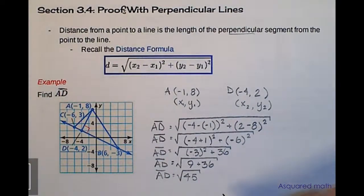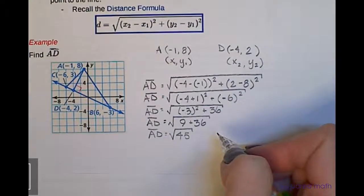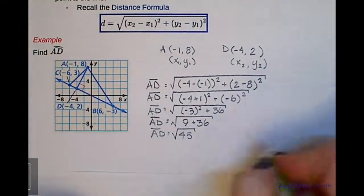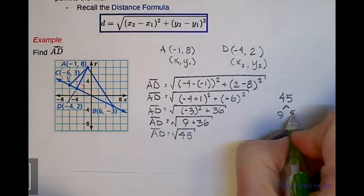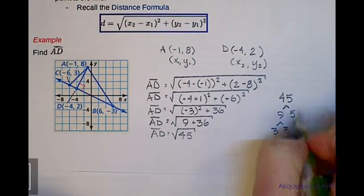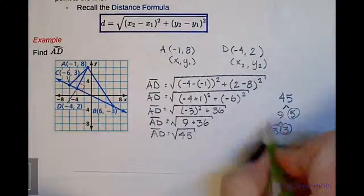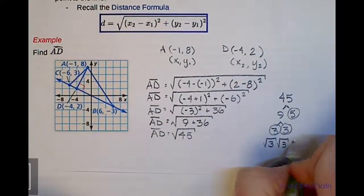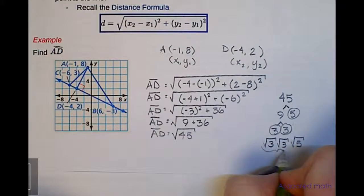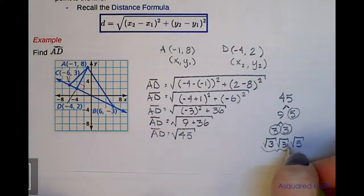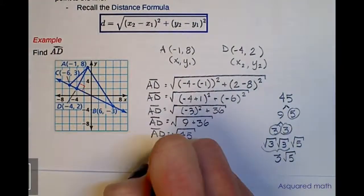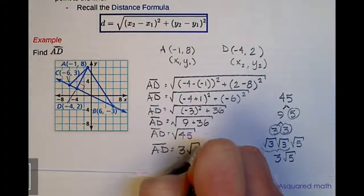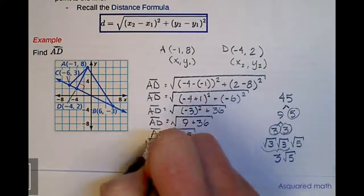So we end up with the square root of 45. The square root of 45 is not simplified, so we need to simplify that. We take 45 and break it down into prime numbers: 9 times 5 gives us 45, and 9 is 3 times 3. So we end up with the square root of 3 times the square root of 3 times the square root of 5. Anytime you have two of those square roots, square root times square root gets rid of the radical, so we end up with 3 times the square root of 5 as our final answer. So 3√5 is the length of line segment AD.